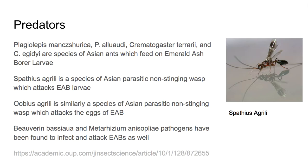They've also got other predators, not just woodpeckers. They've got Asian ants — Plagiolepis monturica, Plagiolepis aluadi, Crematogaster terrarii, and Crematogaster edgidae — which eat emerald ash borer larvae. Spathius agrilli is a parasitic non-stinging wasp that attacks the larvae as a parasite — you can see that on the right there. They'll come back up in my presentation as well; they're very important. Oobius agrilli are also an Asian parasitic non-stinging wasp, but they attack the eggs.